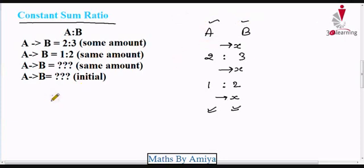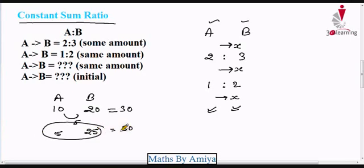So if A and B in a random condition have 10 and 20 rupees, total summation is 30. If A transfers 5 rupees, A becomes 5, B becomes 25. Again the total transaction sum is 30. So if you have a constant sum transaction of amounts between A and B, we can solve this by ratio.